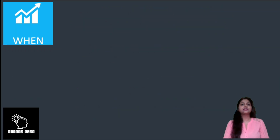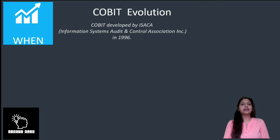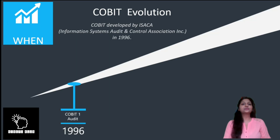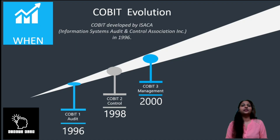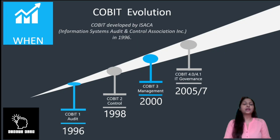Next is 'when.' COBIT was developed by ISACA — the Information Systems Audit and Control Association — in 1996, initially intended to guide auditors. In 1998, COBIT 2 came with a broader version, and in 2000, COBIT 3 covered management guidelines. From 2005 to 2007, various versions of COBIT 4 and 4.1 were released, which also included the IT governance component of organisations.